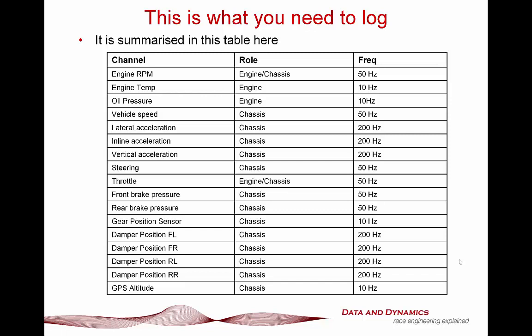Lateral, inline, and vertical G are also necessary, and particularly for those you want to be logging at about 200 hertz. Steering is absolutely essential - you want to be logging that at about 50 hertz. Throttle is also about 50 hertz. Your front and rear brake pressure goes without saying, because without that your driver is basically flying blind. Gear position sensor is also something that's very important. You want your damper pots logged at about 200 hertz.